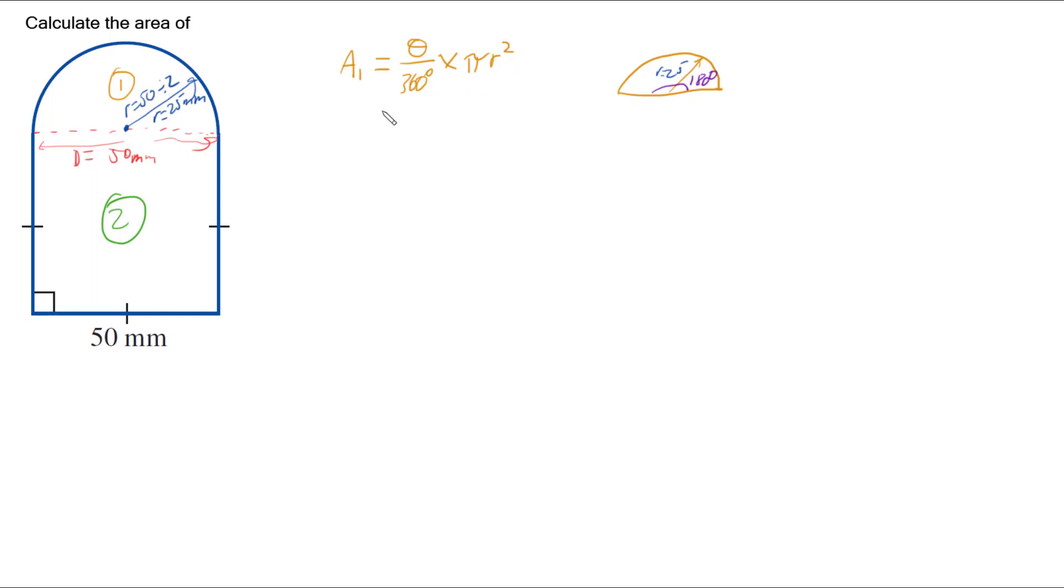I can put these numbers in. I've got 180 degrees divided by 360 degrees, multiplied by pi, multiplied by 25 squared. And so if I work this out, the top half of our shape has an area of 981.75 mm squared.